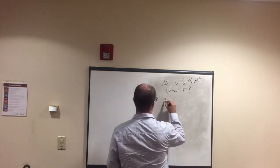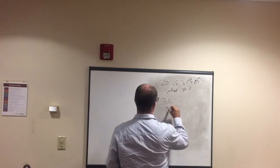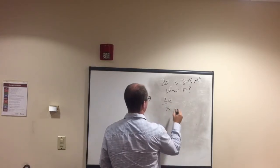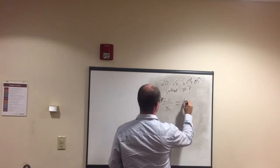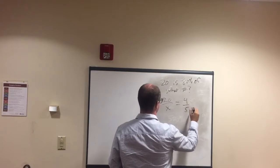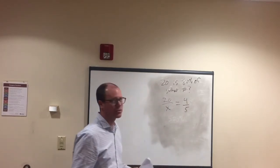So we're saying 20 over some number is the same as 80 percent, the same as 4 out of 5. 80 percent equals 4 fifths.